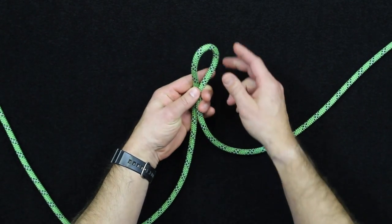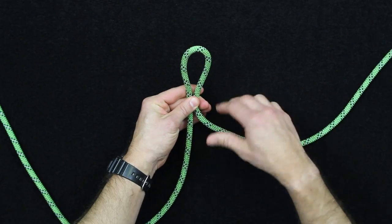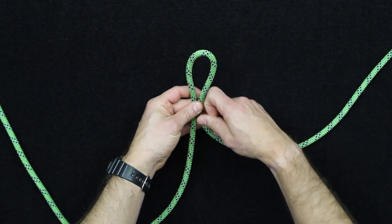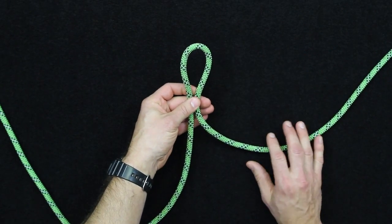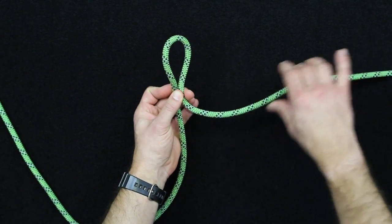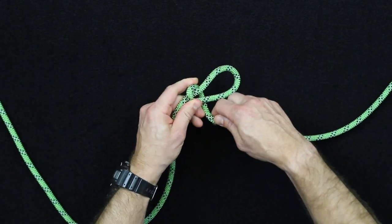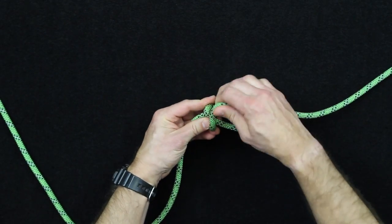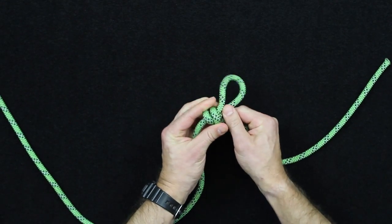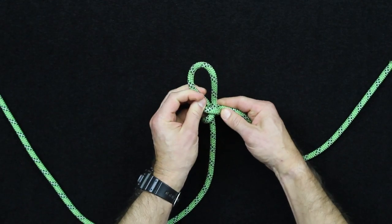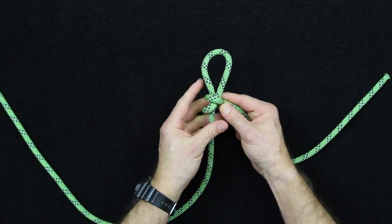You're going to form a bite in the line, and just as a checkpoint, you could use kind of a two inch measurement for the bite itself. You're going to take that working end and wrap around the bite. So that first wrap into the second is actually what's going to lock off that line, so you can see that that line now gets trapped in your wrappings.